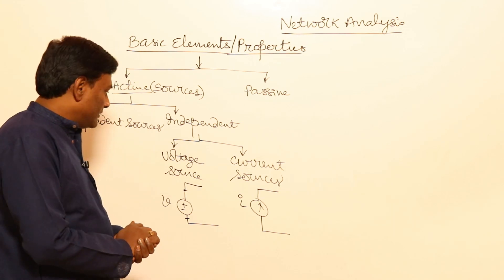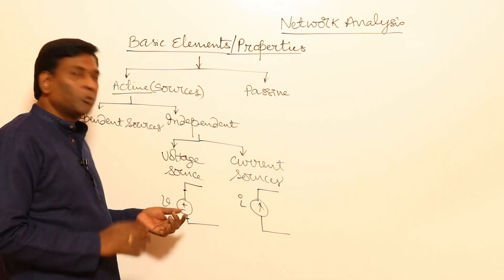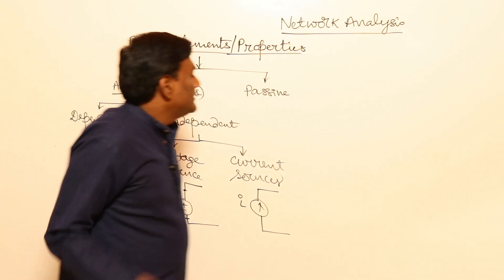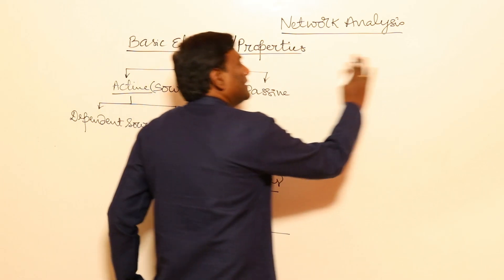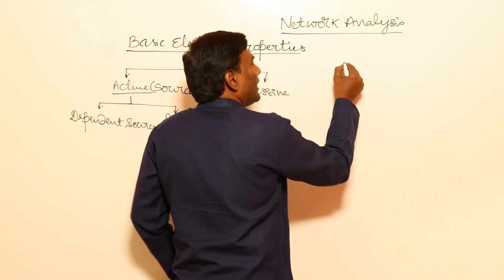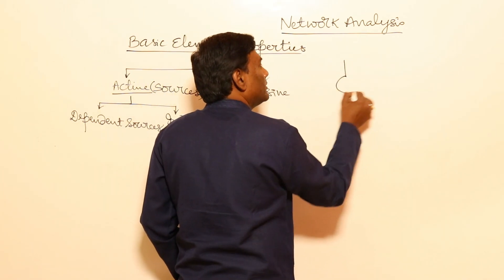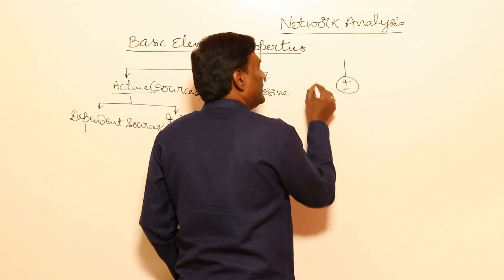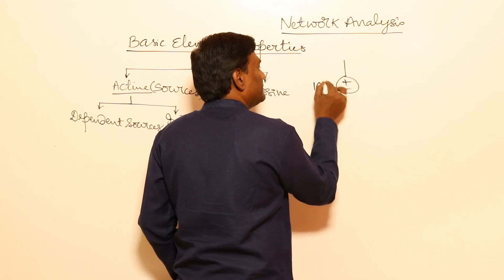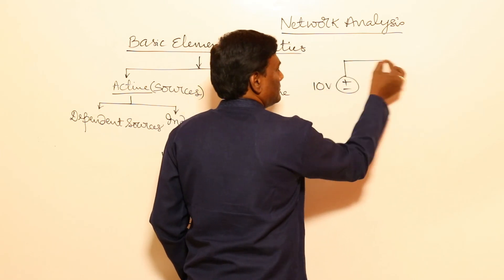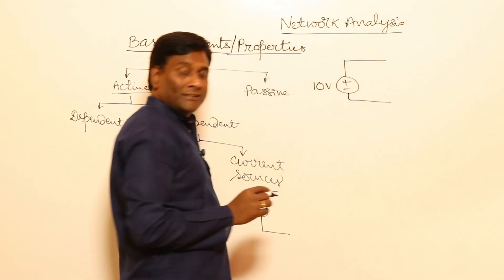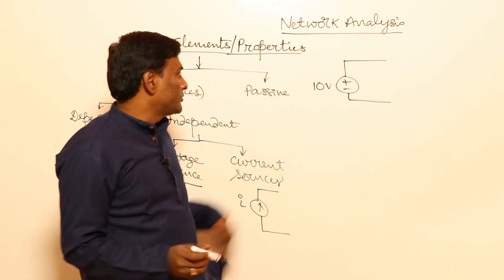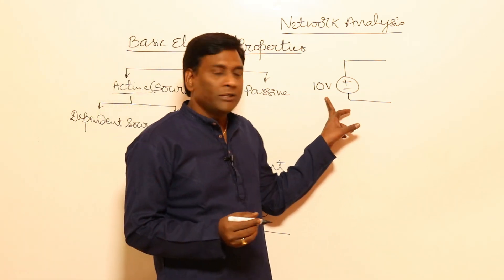In this session, let us focus on voltage source and current source. For example, if I have an independent voltage source of 10 volts, what does it mean? It's a constant voltage source.